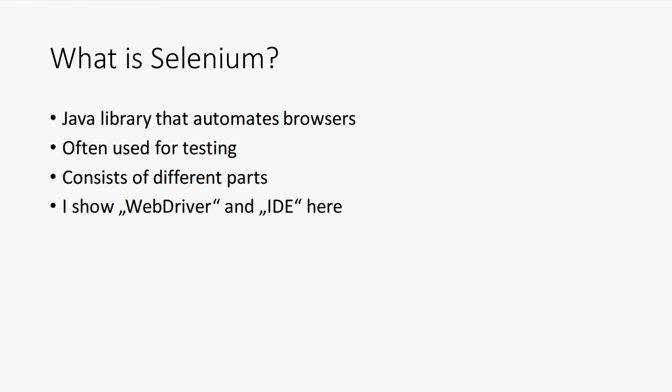So what is Selenium? Selenium is a Java library that automates browsers — and that's all the developer says it is, leaving us to do whatever we want with it. It's often used for automated user interface tests. It consists of different parts, and in this video series I will cover WebDriver and IDE.